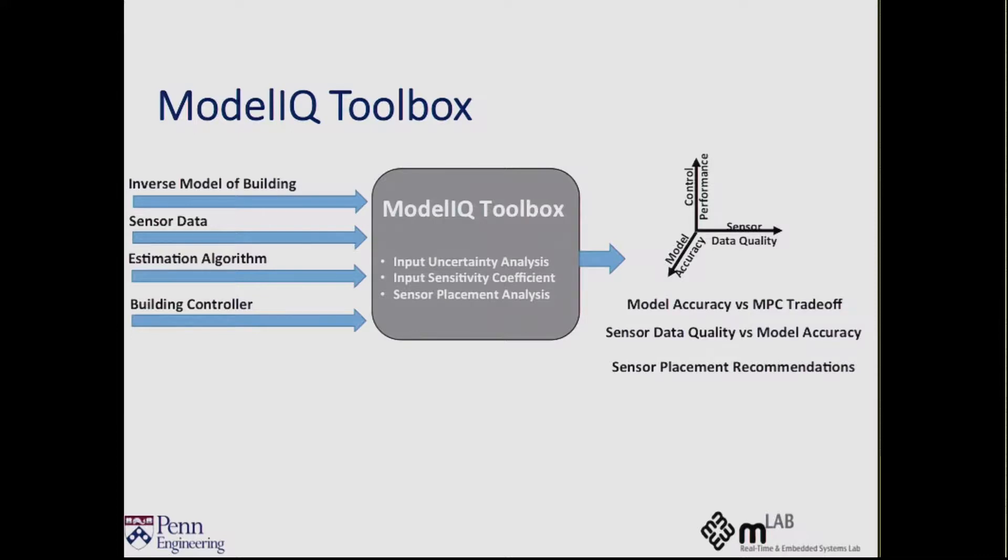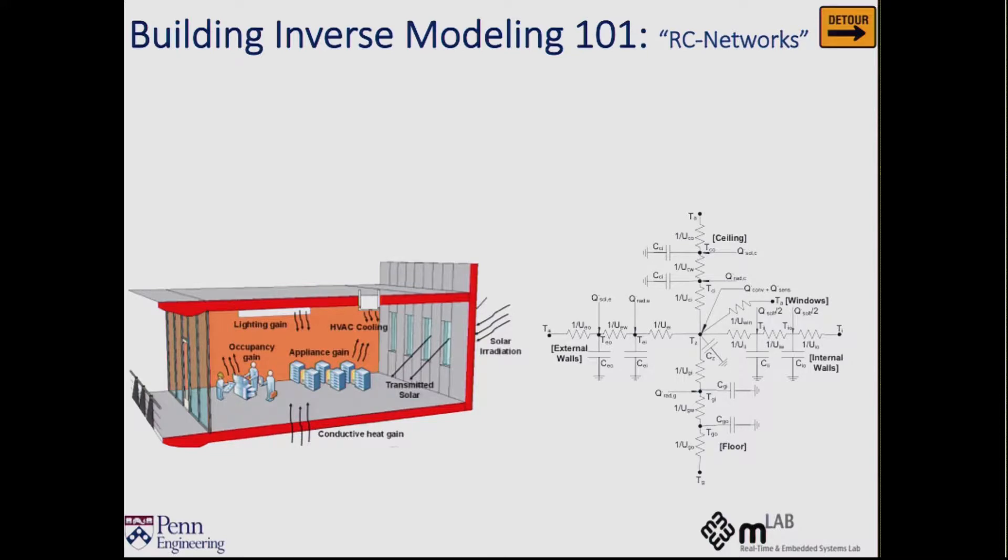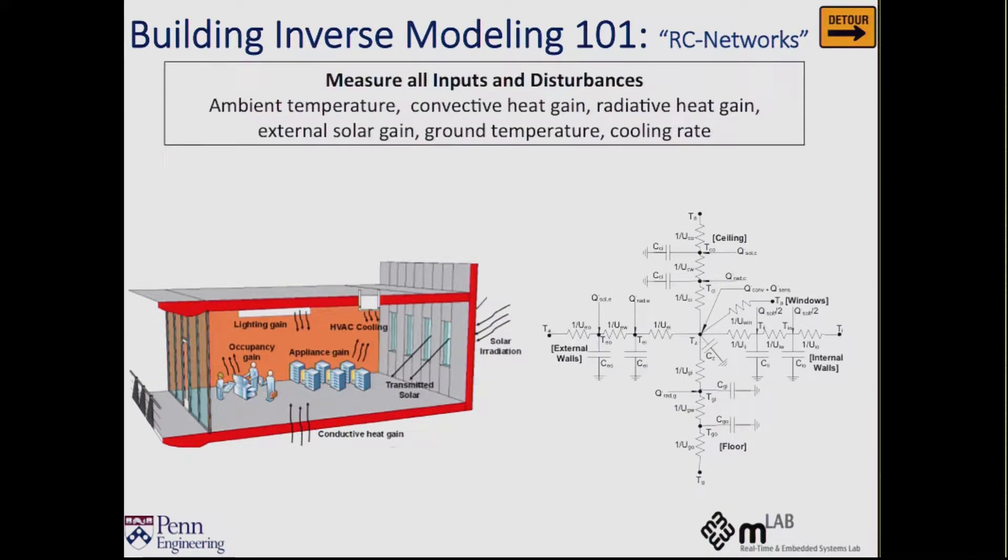But to understand what it does underneath the hood, I will give you the quickest possible crash course on how do you model a building dynamically. So say I have to learn the dynamical model of this room, the first thing I would do is measure all possible disturbances of this room. So there's a chicken-and-egg problem here. I want to avoid using additional sensors, but to begin with, I need to measure some disturbances. So the way out is using these virtual sensing techniques or using some low-cost temporary deployment to establish this initial model. But the idea is you measure these disturbances, and this kind of a modeling is called gray box RC modeling for buildings.